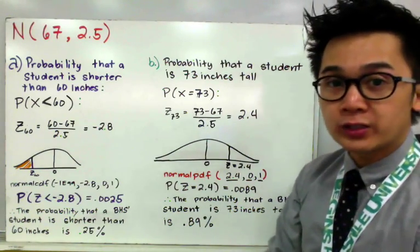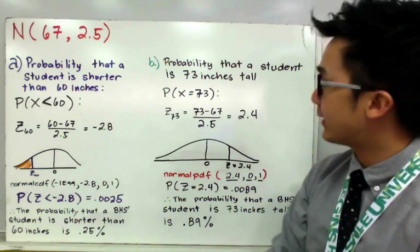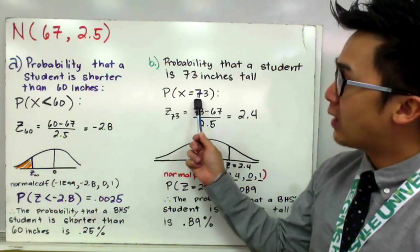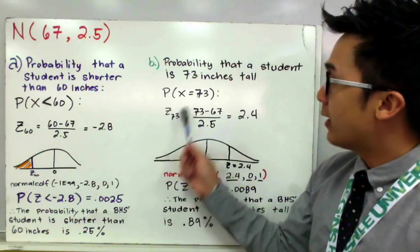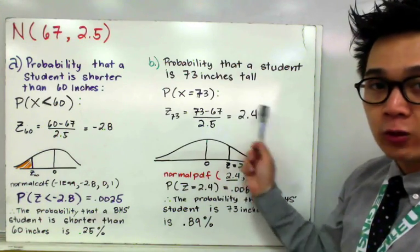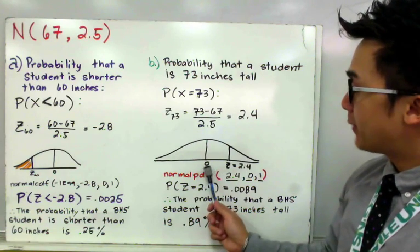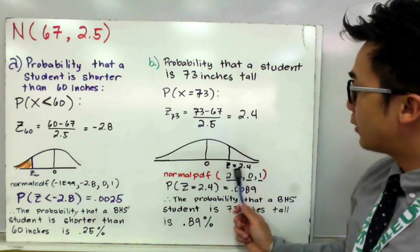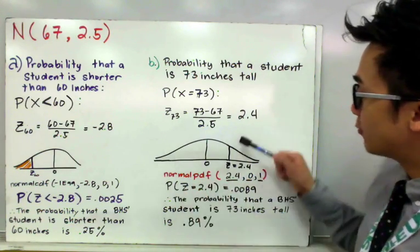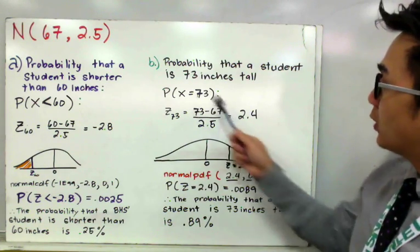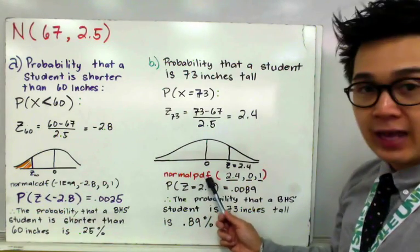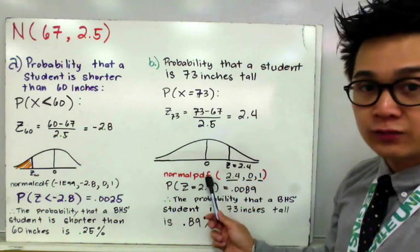For letter B, the question is to find the probability that a student is exactly 73 inches tall. Our probability notation is P(X = 73). Just as in problem A, we standardize 73 inches to a Z-score, which gives us 2.4. We illustrate this on the standard normal distribution with mean 0 and standard deviation 1. Since we're finding an exact probability, there is no shaded region in the illustration. Using the calculator, instead of normalCDF, we now use normalPDF, which is the first option in the TI-84 distribution functions.